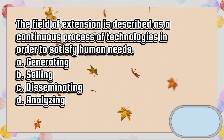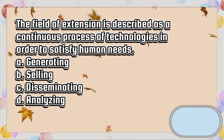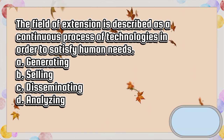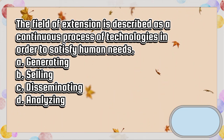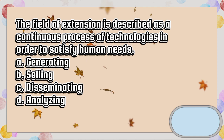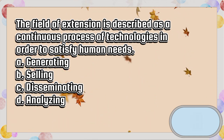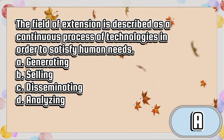The field of extension is described as a continuous process of technologies in order to satisfy human needs. A. Generating. B. Selling. C. Disseminating. D. Analyzing. The answer is letter A.